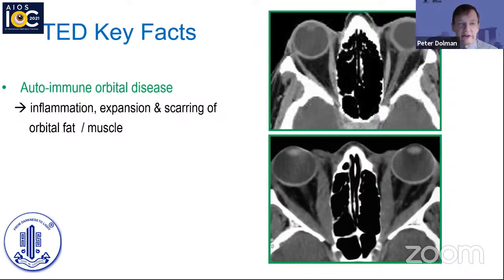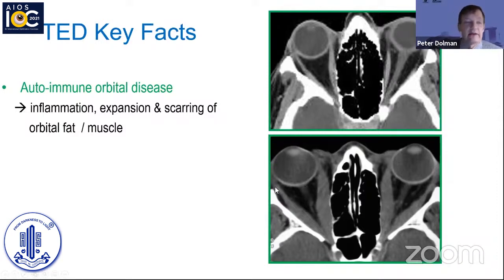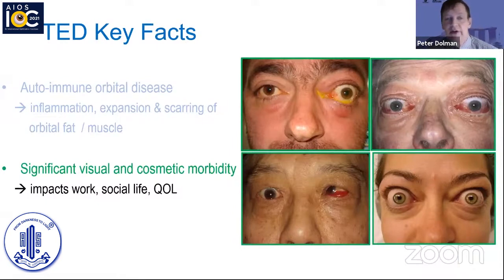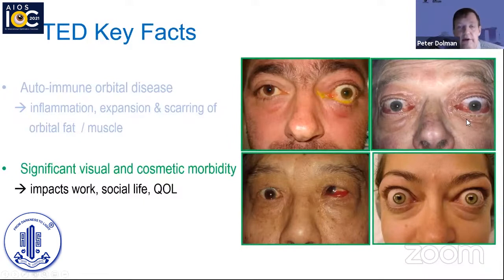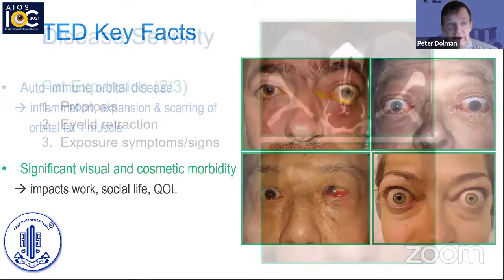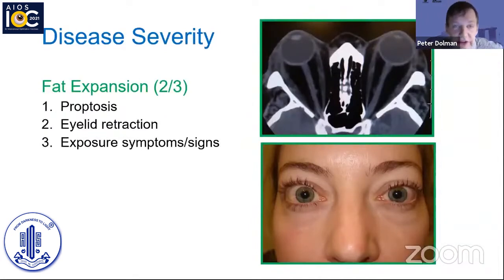As we know, thyroid eye disease is the most common orbital disease worldwide. It's an autoimmune process that causes inflammation, expansion, and in some cases scarring of orbital soft tissues, including the orbital fat, the extraocular muscles, the levator muscle, and lacrimal gland. These soft tissue changes can lead to significant visual and cosmetic morbidity, which impacts work, social life, and quality of life. One of the challenges is the broad spectrum of clinical manifestations and how we catalog these different soft tissue changes.